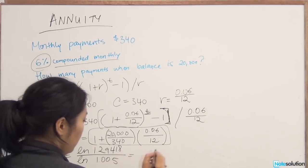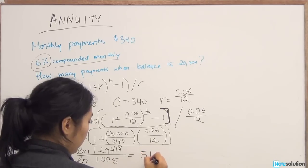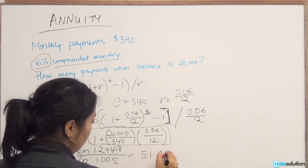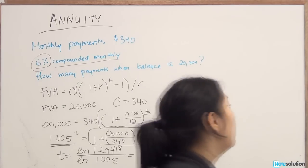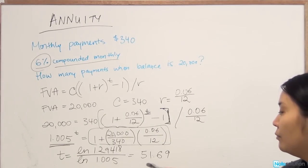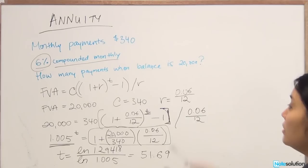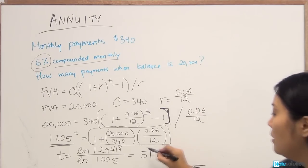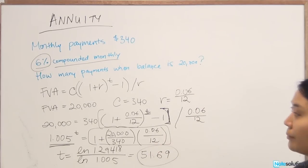And once you solve for t, you get 51.69. So what does that mean? It means that to reach the balance of 20,000 and you're compounding at 6% in monthly terms and you're making payments of $340 every month, you need to make 51.69 payments to reach this value. And that's the final answer. Thank you.